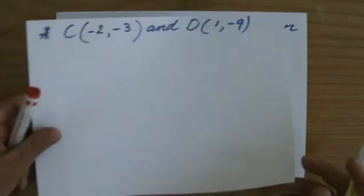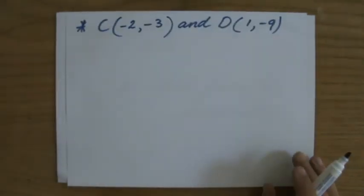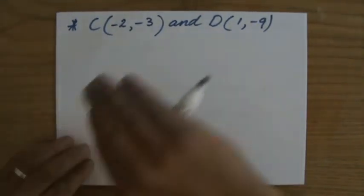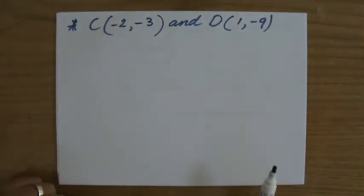They give me two coordinates, point C (-2, -3) and point D (1, -9). I have to construct the equation of the line that goes through these two coordinates, these two points.